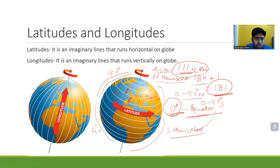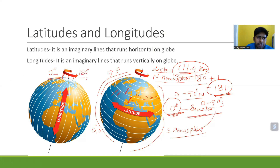Now, longitude. All longitudinal lines are equal in length. Longitude starts from 0 degrees, which is known as the prime meridian, and 180 degrees is known as the international date line. It goes from 0 to 180 degrees, then 179 back to 0 again. The half from 0 to 180 degrees is considered the eastern hemisphere, and 179 back to 0 is the western hemisphere.